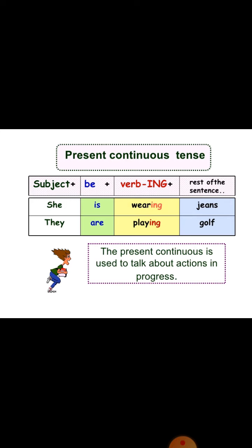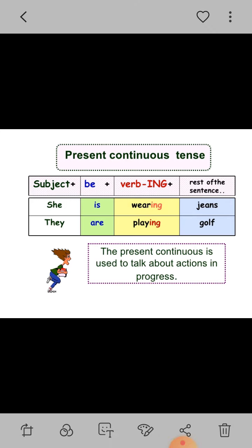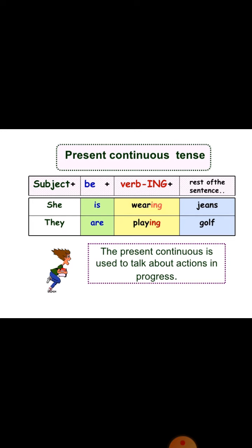The formula of present continuous is: subject plus be — 'be' means ismr, verb to be — plus verb first form with ing, plus rest of the sentence, meaning object. For example: She is wearing jeans. They are playing golf.